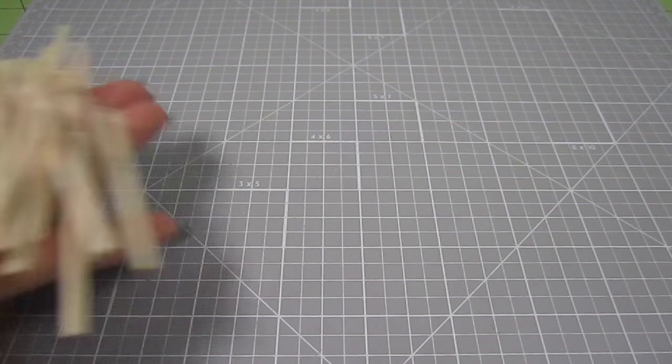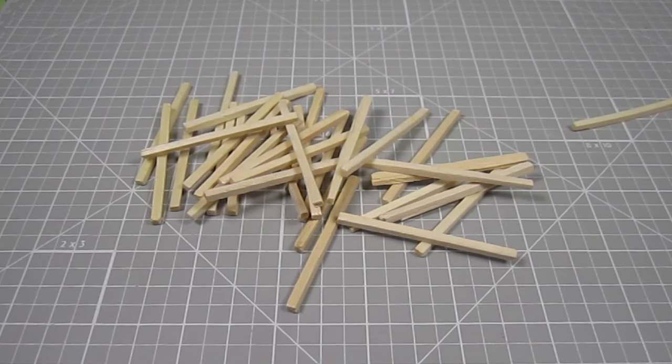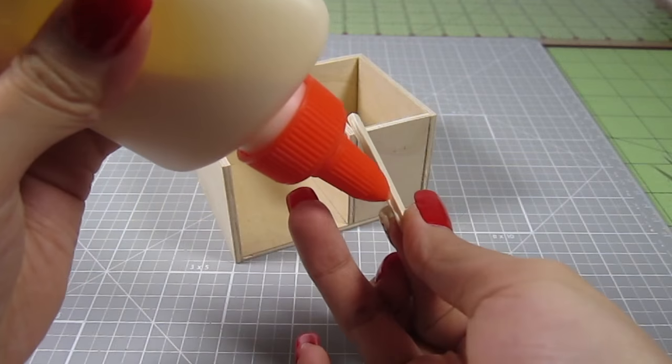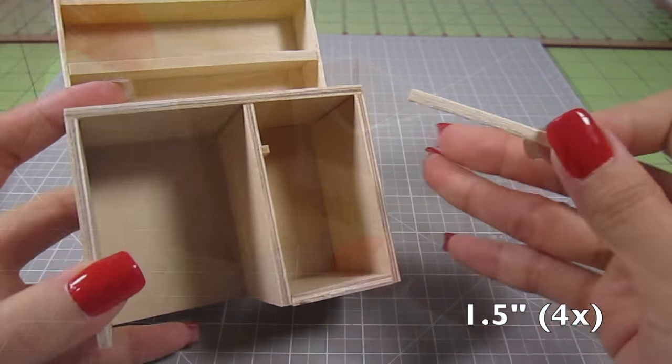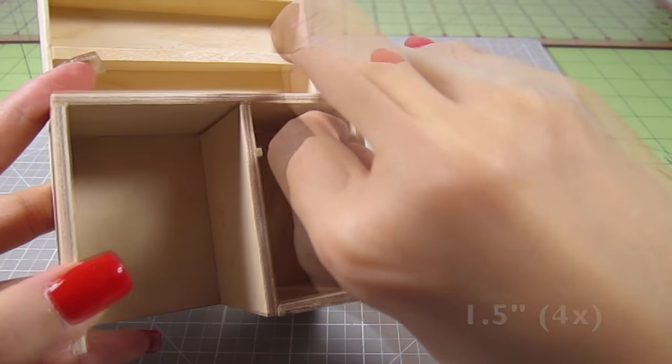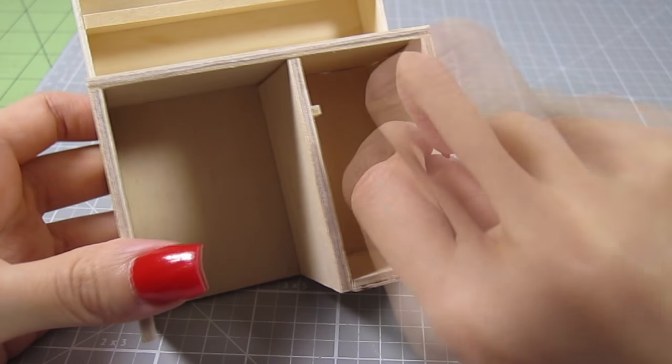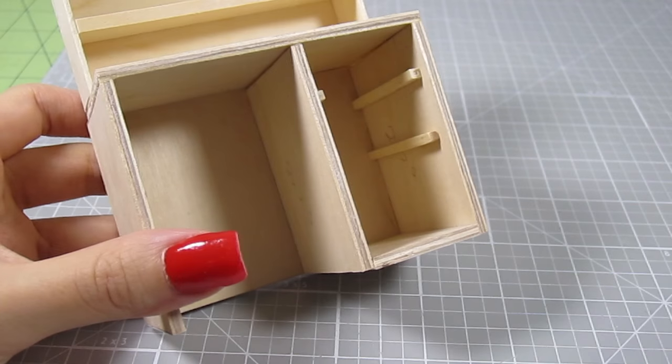Before we can slide these into the desk, we first need to create some ledges for them to sit on. For that, I used some craft matchsticks. Cut out 4 1 1⁄2 inch pieces and glue them to the inside walls of the drawer area. The first set should be 1⁄2 inch away from the top and the other set should be 1⁄2 inch away from the first set.